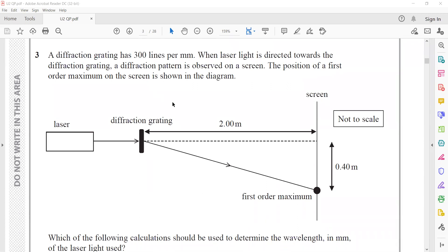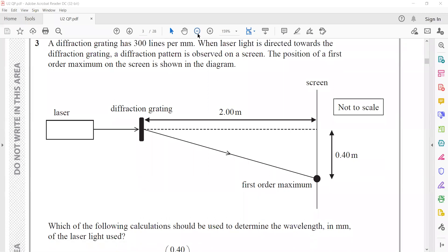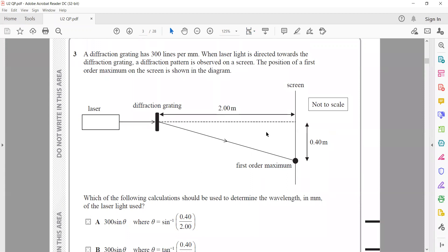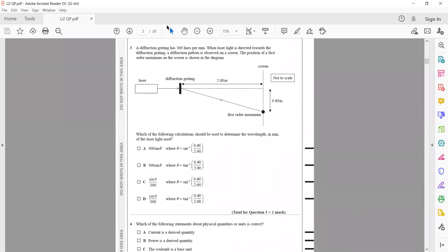A diffraction grating has 300 lines per millimeter, so 1 millimeter contains 300 lines. d is the gap between the two slits, so how to find d? d is the reciprocal, so it will be 1 divided by 300. Which of the following calculations should be used to determine the wavelength in millimeters of a laser light?